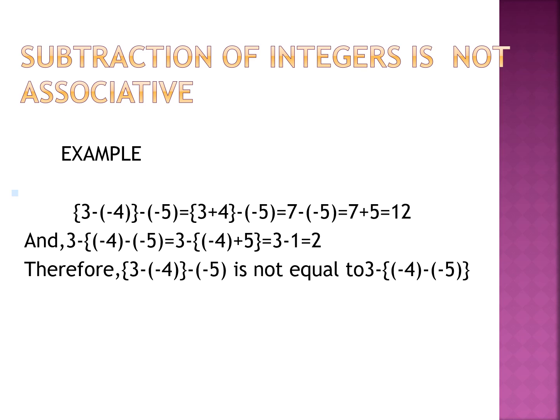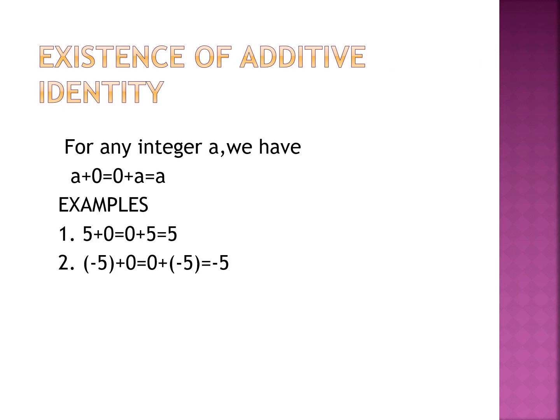Now the fourth property — the existence of additive identity. The number which when added doesn't change the result is 0. For any integer a, a plus 0 equals 0 plus a equals a. For example, 5 plus 0 equals 0 plus 5 equals 5, and (−5) plus 0 equals 0 plus (−5) equals −5.